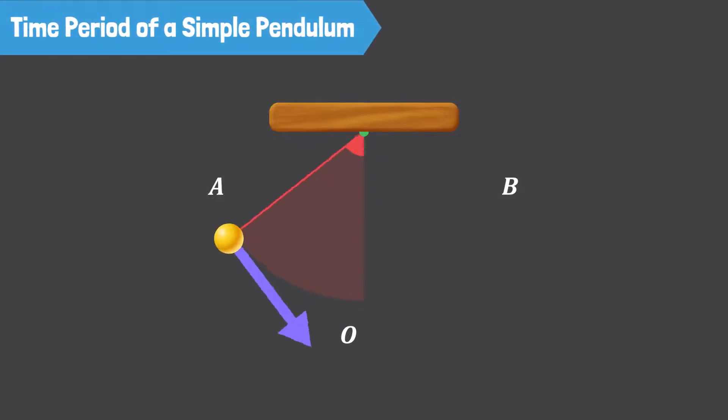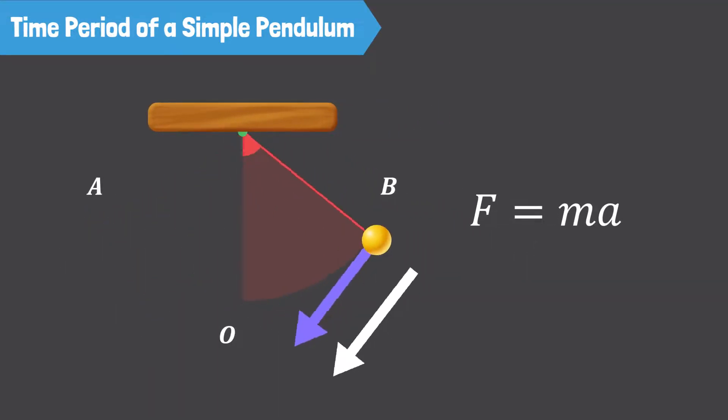Knowing that the restoring force always acts towards the mean position, can you tell in which direction the acceleration of the bob will be directed? The acceleration of the bob, just like the restoring force, is always directed towards the mean position O. Remember Newton's second law, F equals ma. The acceleration always has the same direction as the net force.